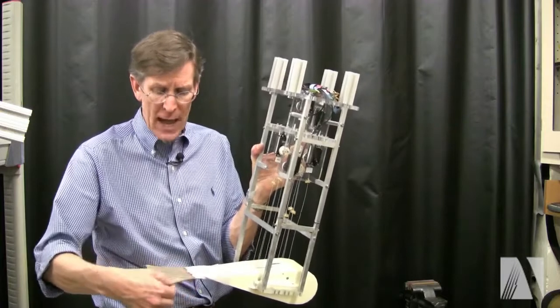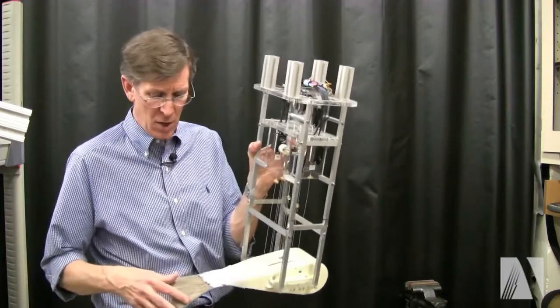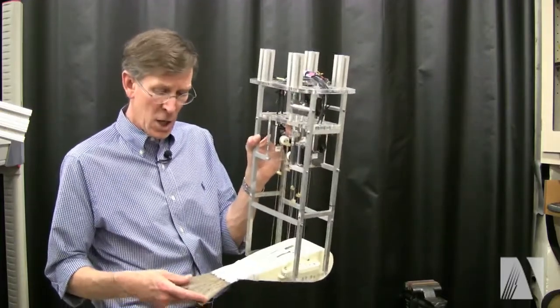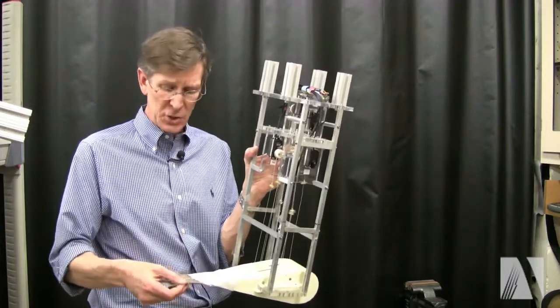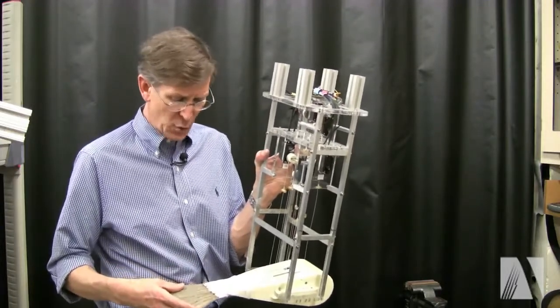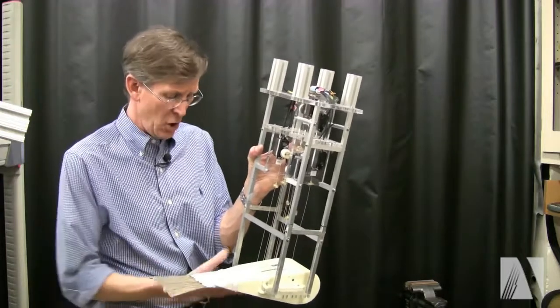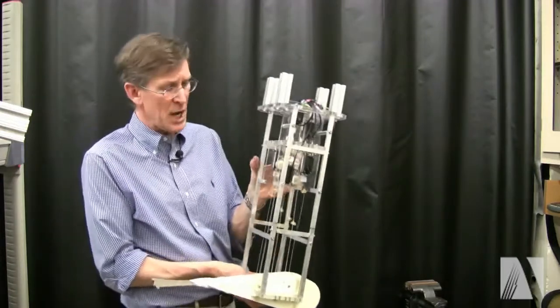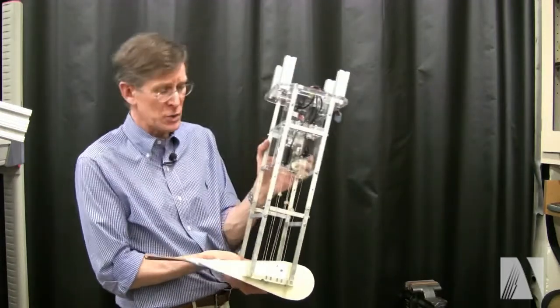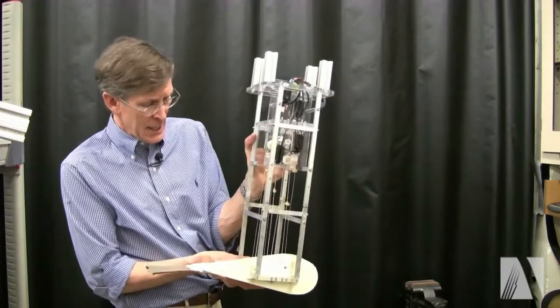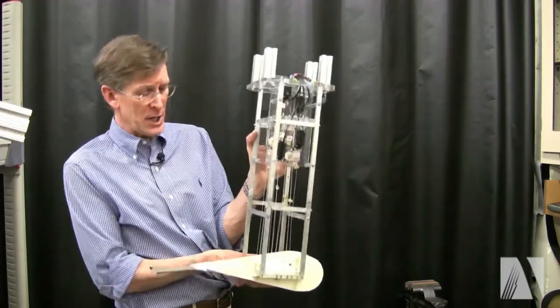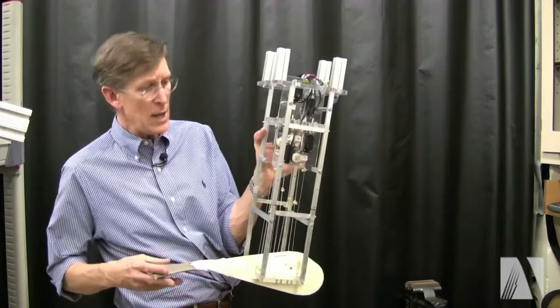And so we can trade out these fin rays which you see here in the tail membrane for ones of different stiffnesses. These are 3D printed and we can swap these out to study the effect of stiffness on performance. Now this robot was designed by Professor James Tangora of Drexel University and it's used for our collaborative projects on fish tail function.